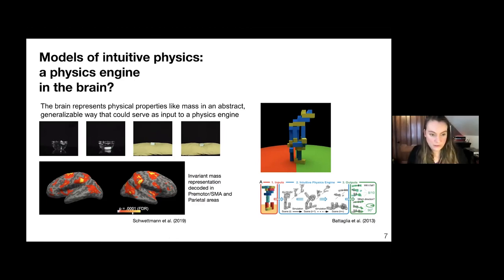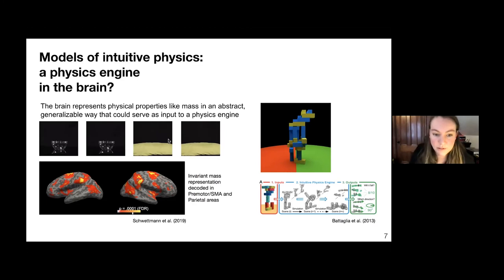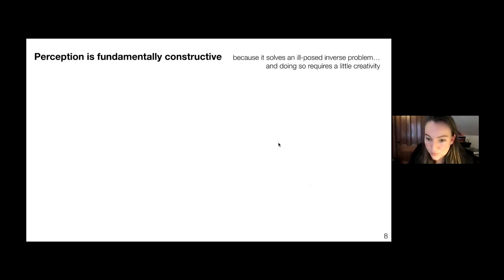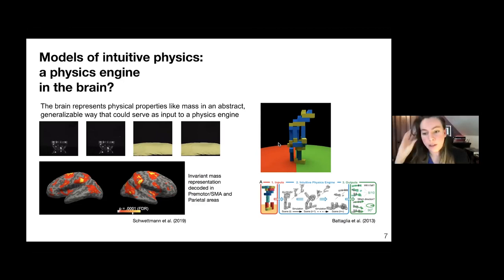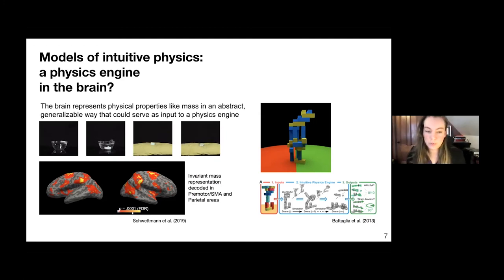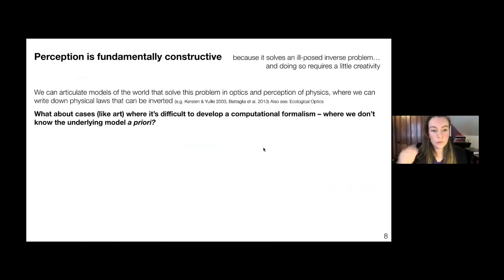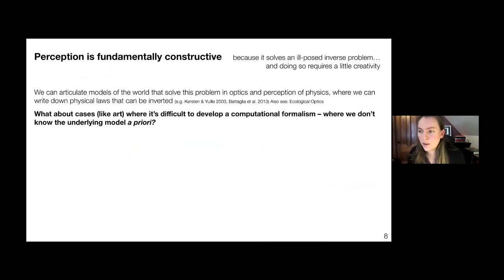We find representations of physical variables like mass and friction that generalize across any kind of physical scene, suggesting an account of physical reasoning in the brain modeled via probabilistic simulations of a physics engine. But what about cases like art, where it's difficult to develop some kind of computational formalism — where we don't know the underlying model? For instance, how to create a Cézanne painting a priori: what are the underlying dimensions we'd need to write down to make sense of how we see or create things? This whole area is what we dive into in the vision, art, and neuroscience course.